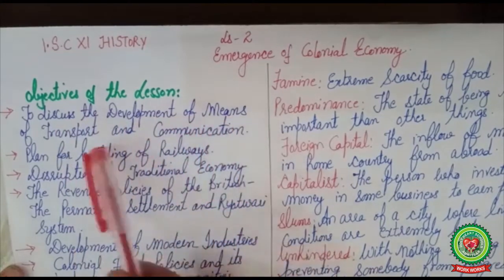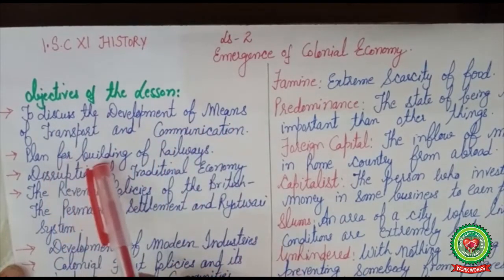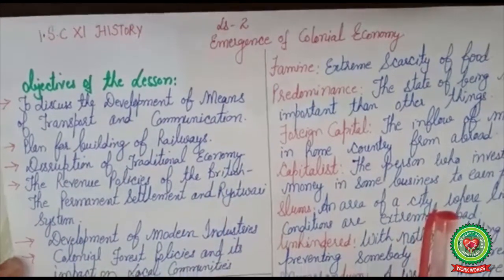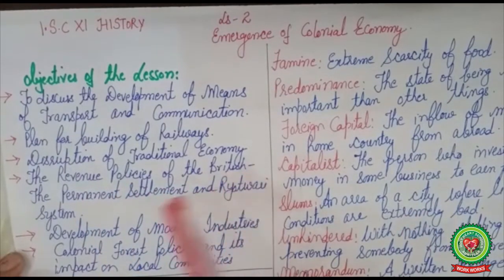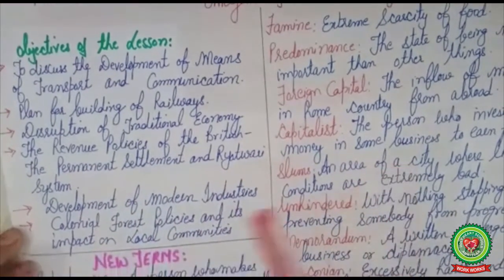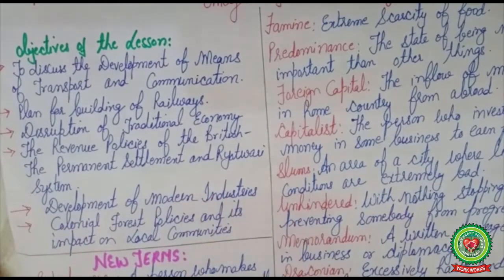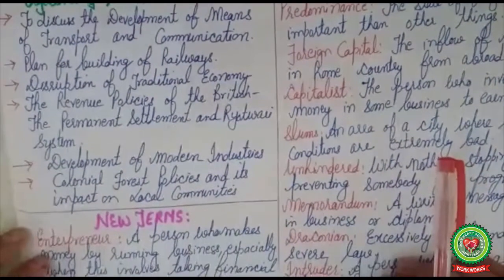We had already discussed the development of means of transport and communication, the plan for building of railways, disruption of traditional economy, and the revenue policies of the British including the Permanent Settlement and Ryotwari System. In this session, we will discuss the development of modern industries in India and the colonial forest policies and their impact on local communities.